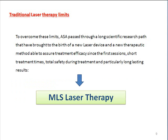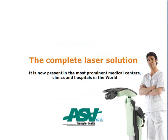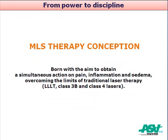To overcome these problems of longer treatment times and thermal effects, ASA passed through a long scientific research path and brought forth a new generation of class 4 lasers and a new therapeutic method known as MLS laser therapy. MLS laser therapy is aimed to treat aches, pain, inflammation, trauma, and hematomas, and it is now present in the most prominent medical centers in the world. It was born with an aim to obtain a simultaneous action on pain, inflammation, and edema, overcoming the limits of traditional class 3 and class 4 laser therapy.